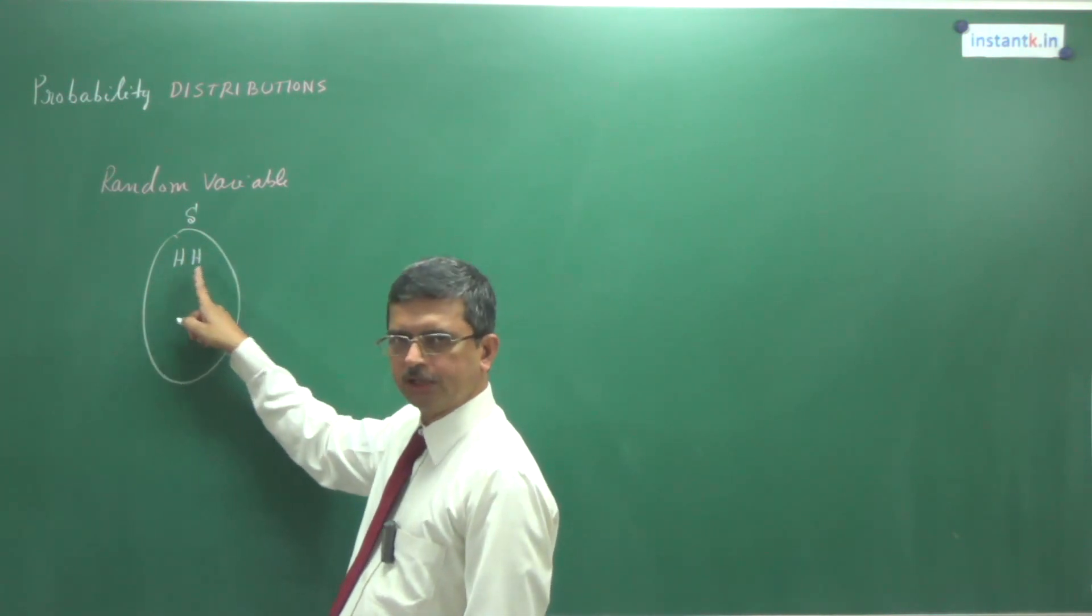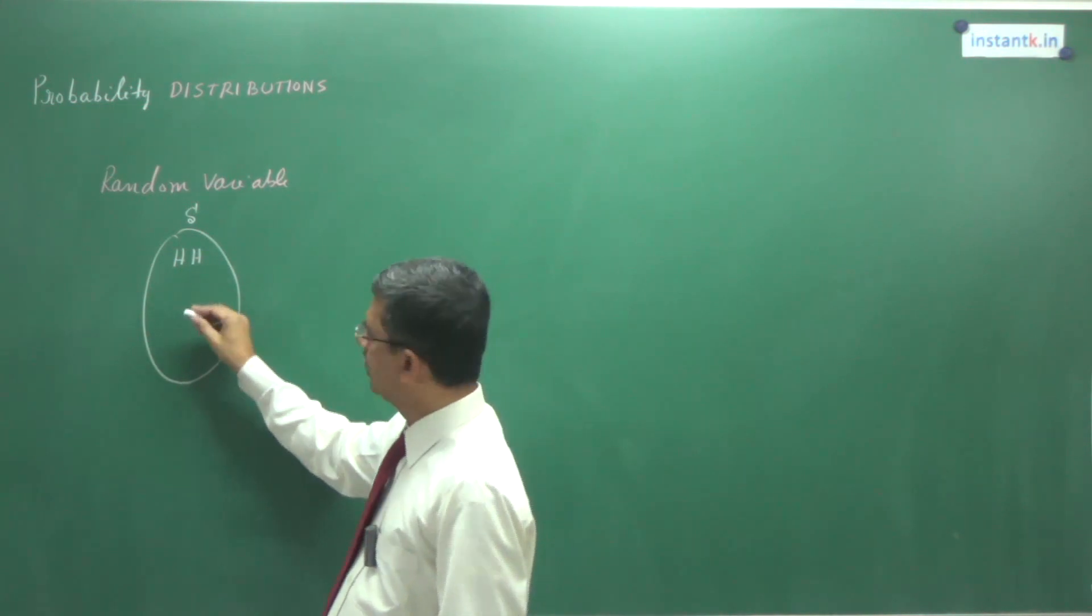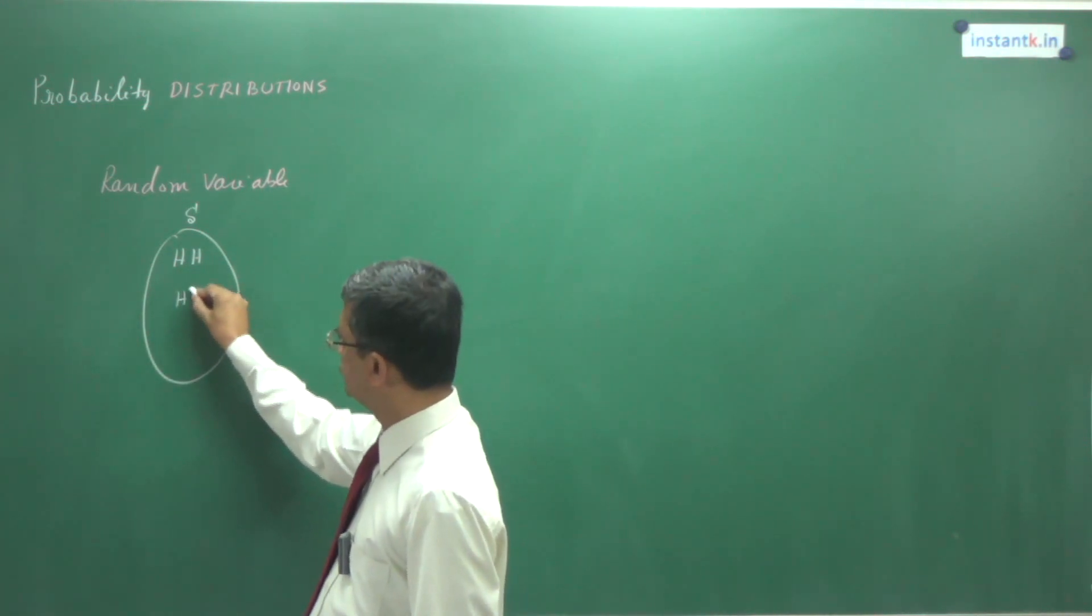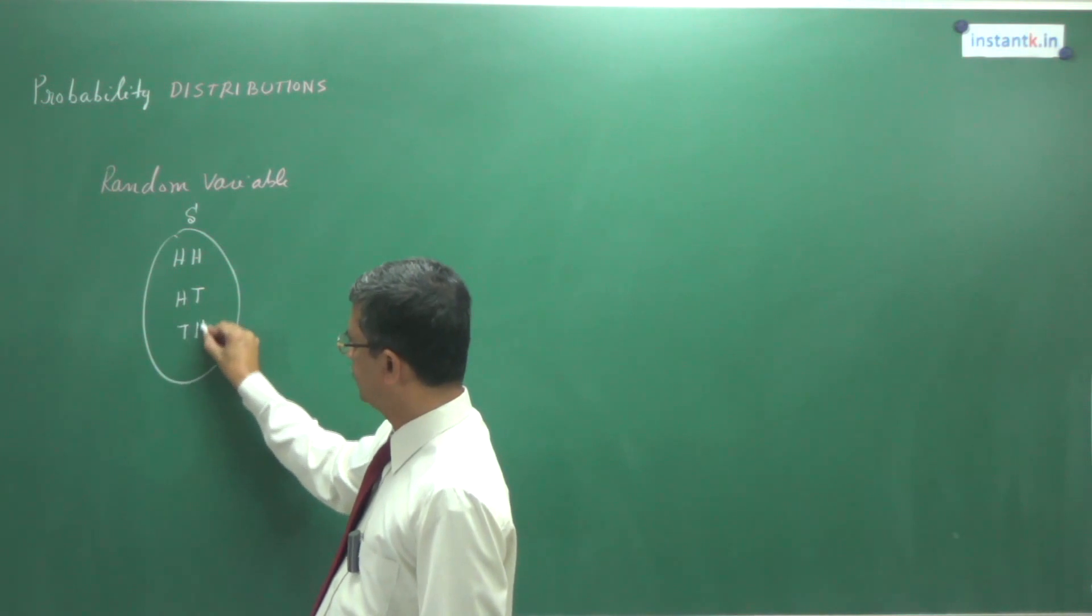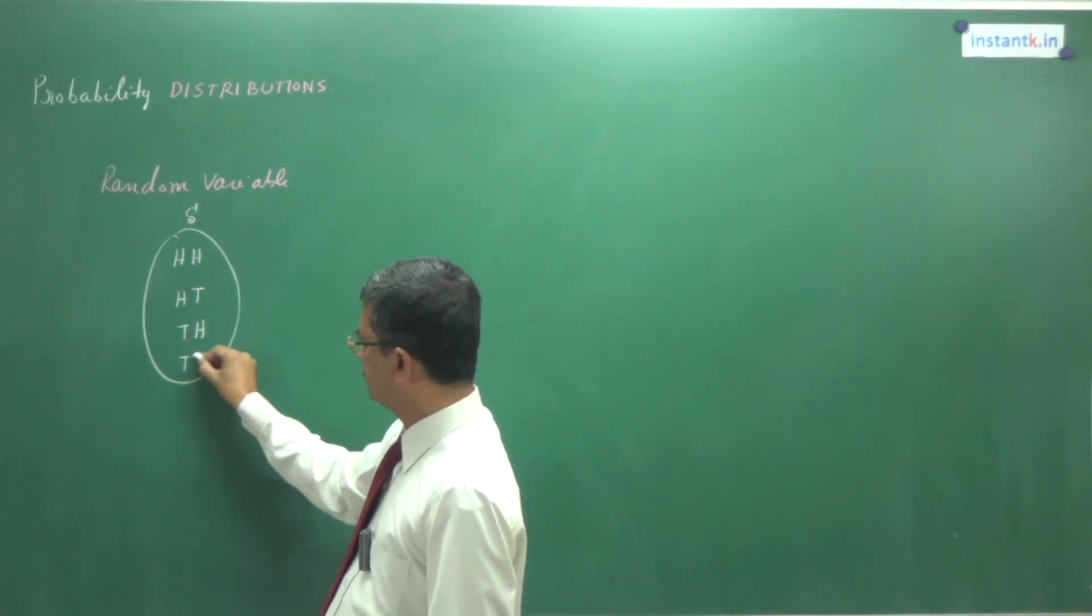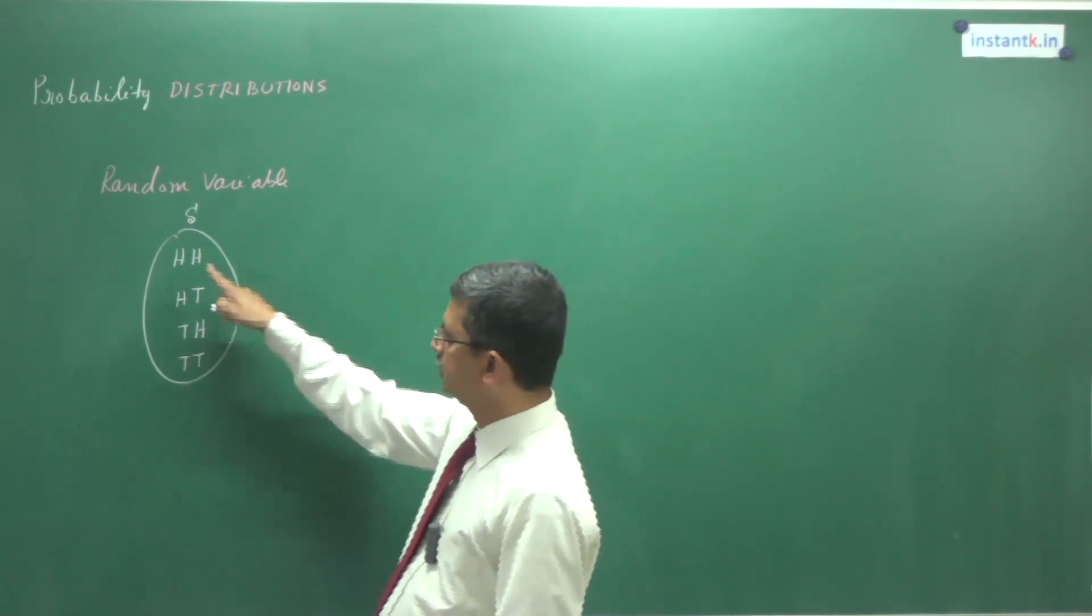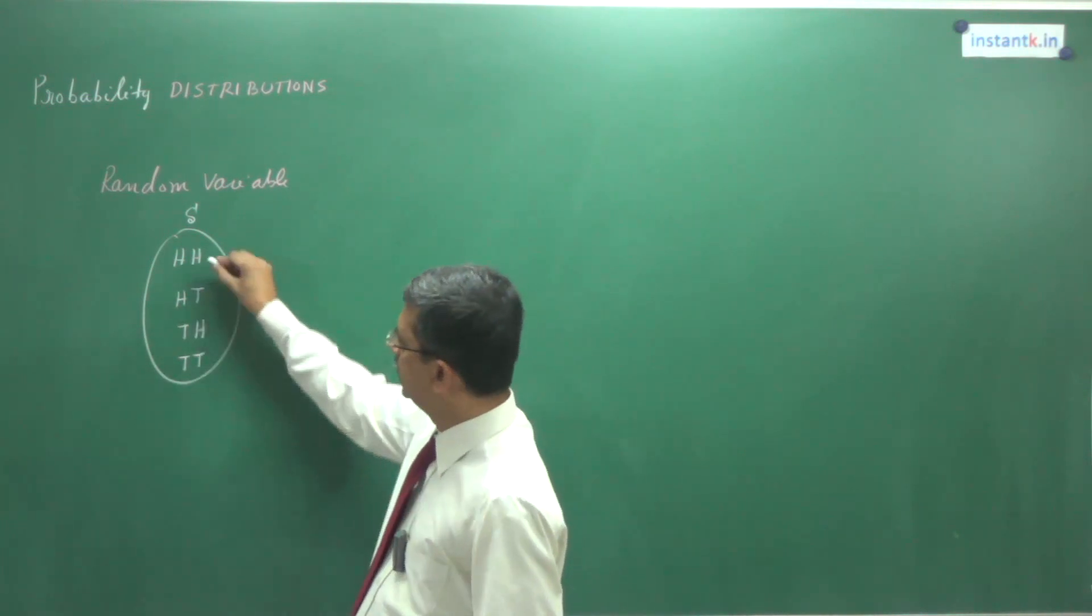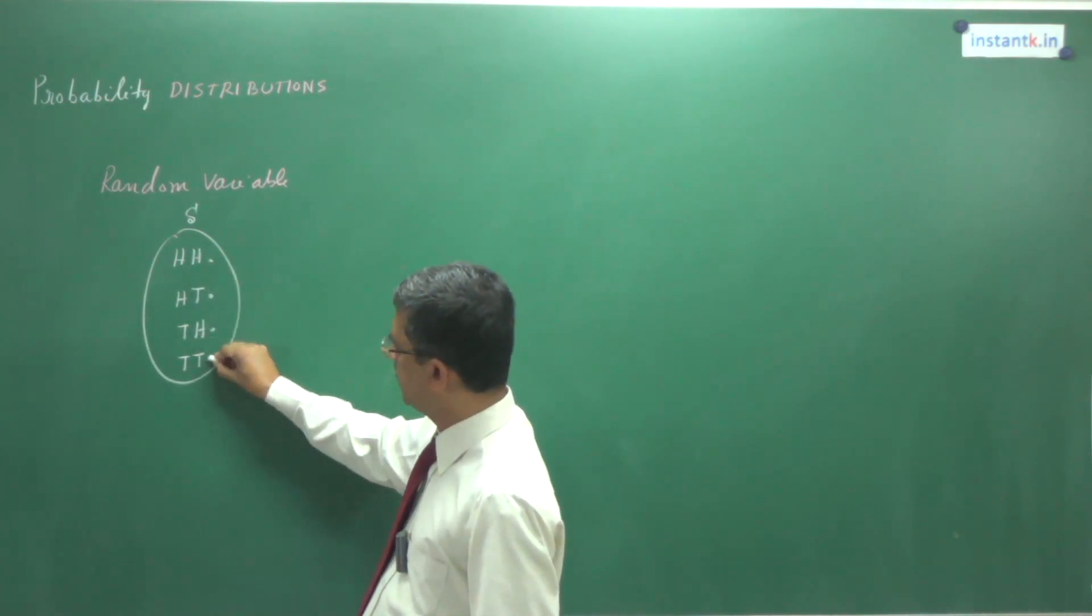The first time I get H, next time I get H, or HT, or TH, or TT. This is a sample space. Each are called sample points.